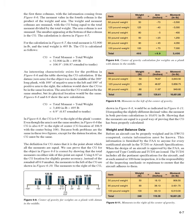The definition of CG states it is the point about which all moments are equal. Using 6.87 as the CG location for accuracy, the moments to the left of the CG (Figure 6-10) and to the right (Figure 6-11) both equal 10,651 in·lb—proving the CG has been properly calculated. Showing that the moments are equal is a good way of proving the CG calculation is correct.